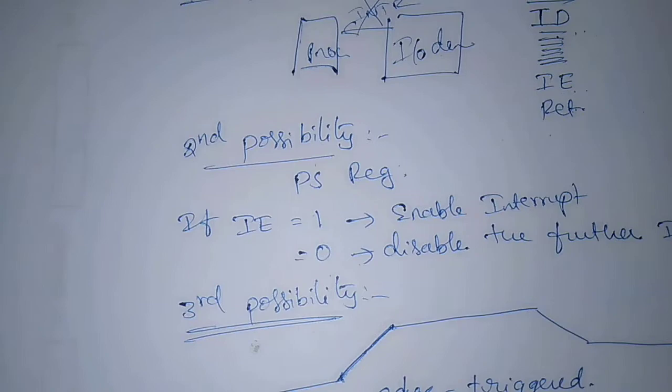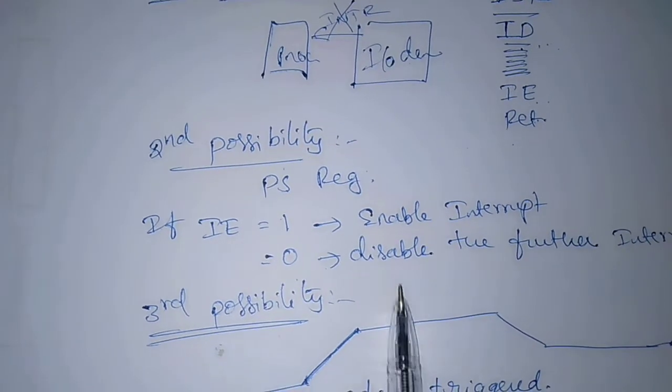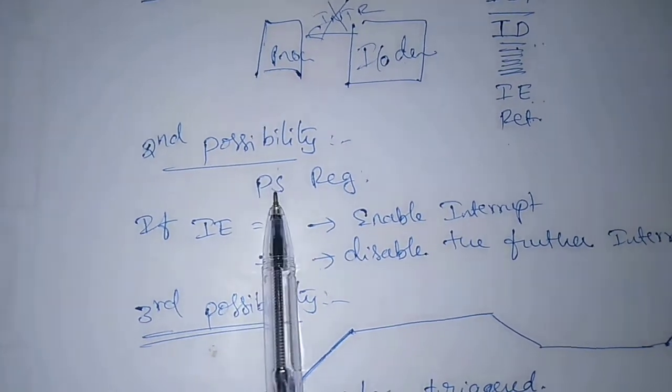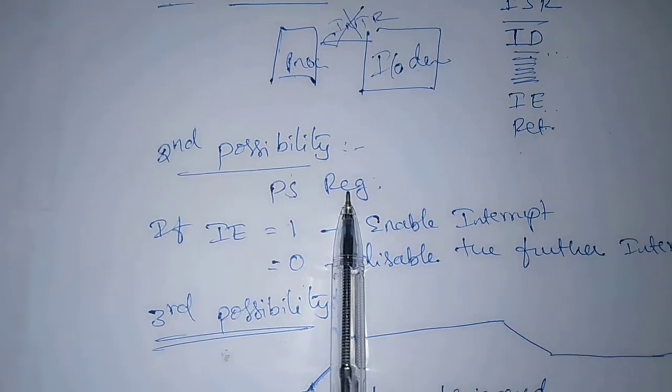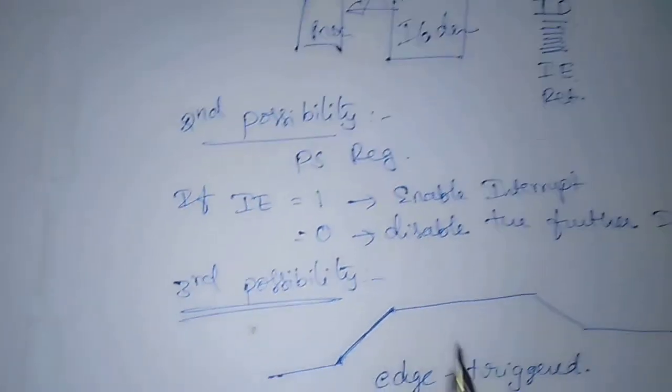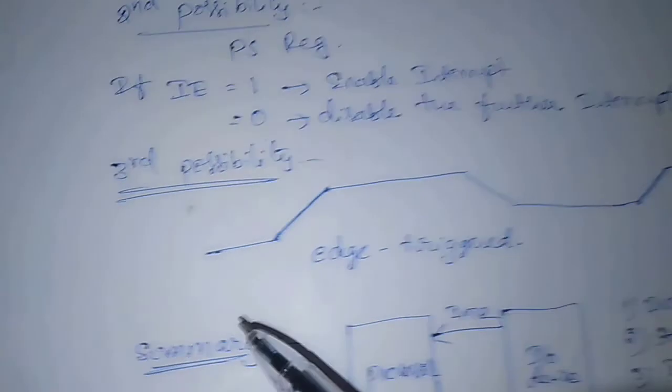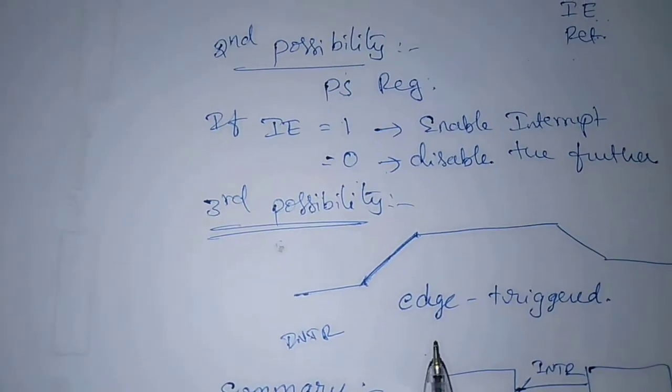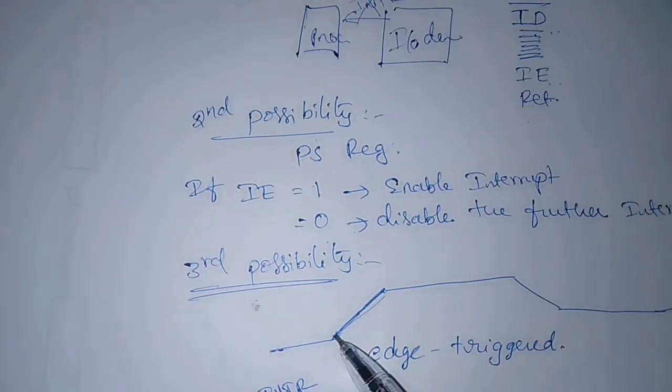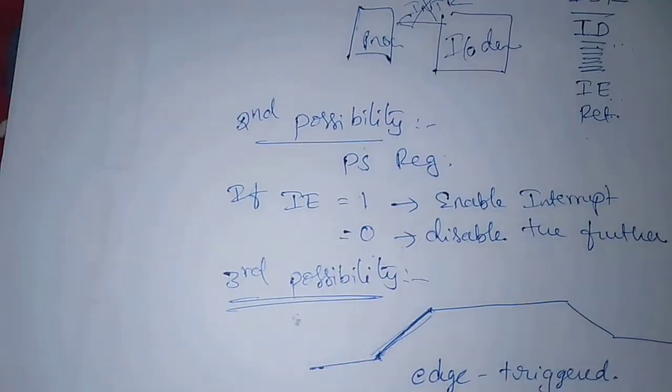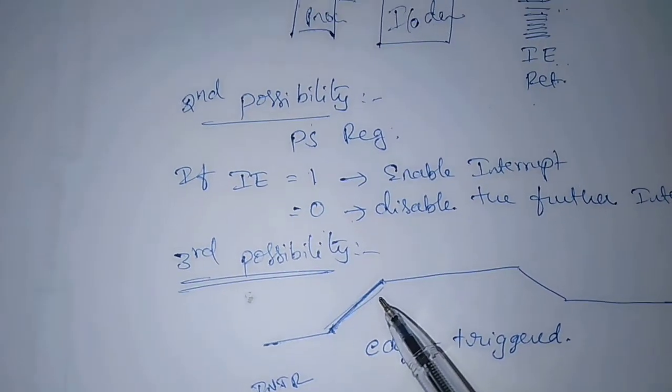Processor, likewise, interrupts can be enabled or disabled with the help of IE bit of the program status register. Next, coming to the third possibility. Here, this is the clock signal. Processor has a special INTR for which the interrupt handling circuit responds only to the leading edge of the signal. This is the leading edge of the signal.